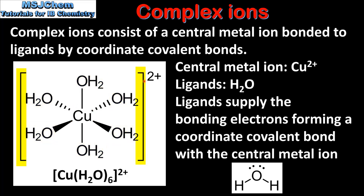Note the use of square brackets around the complex ion. We also see the charge outside the square brackets — in this case it is 2+. This is the charge on the complex ion as a whole. Here we can see the formula of the complex ion. Note the use of square brackets and the charge outside the brackets.